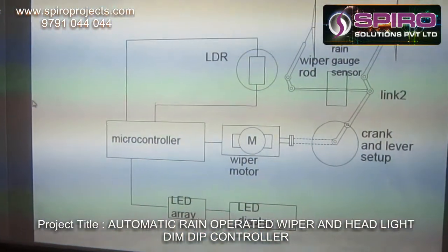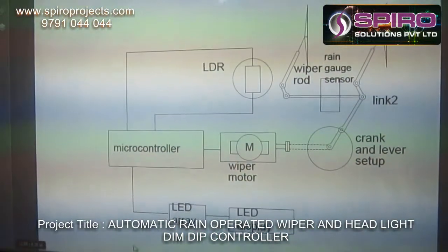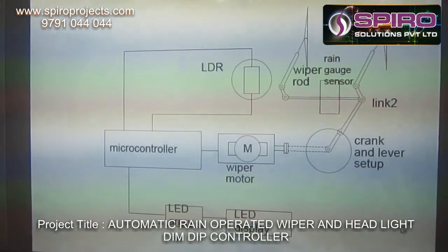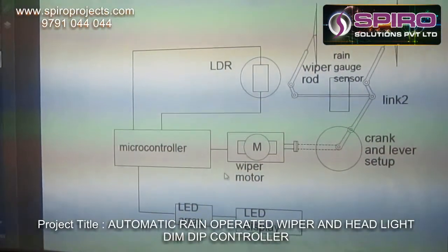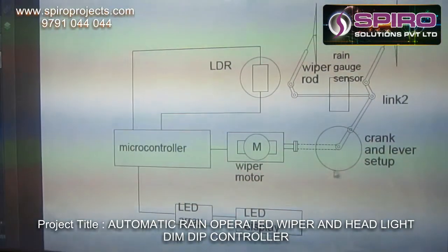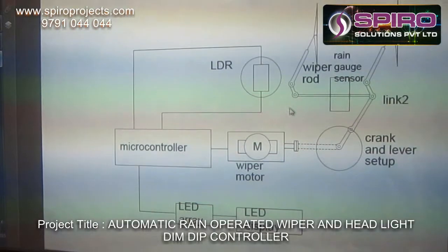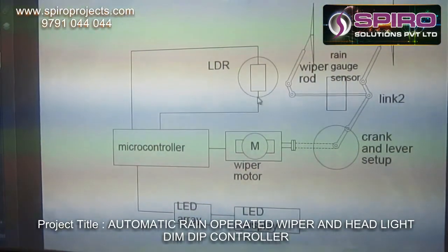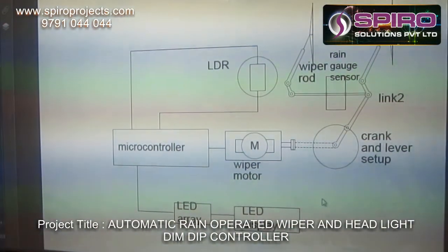The main diagram of this project is shown in the figure. It consists of a Microcontroller, wiper motor, crank and lever mechanism, rain sensor, wiper rod, LDR sensor, LED array, and LED display.